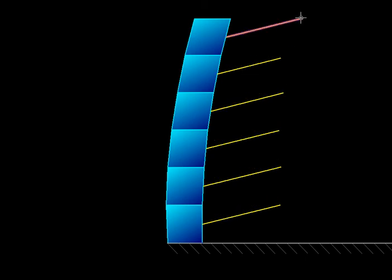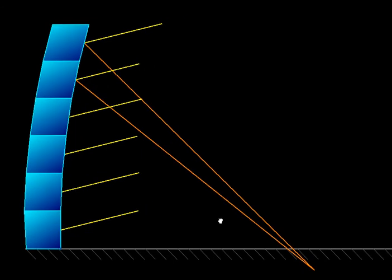But although the incident rays are parallel to each other, the window panes that they are striking are not parallel. They are not co-planar and that makes the reflected rays non-parallel. So the reflected rays are going to intersect each other. This is the way the reflected rays would look.